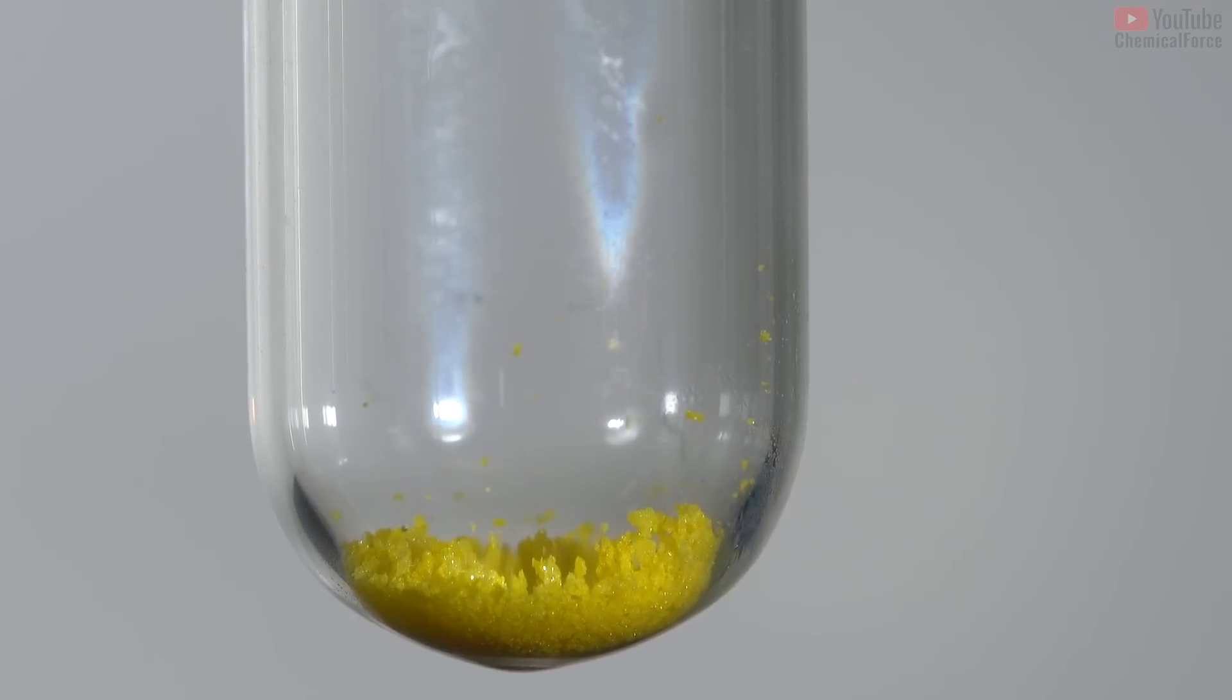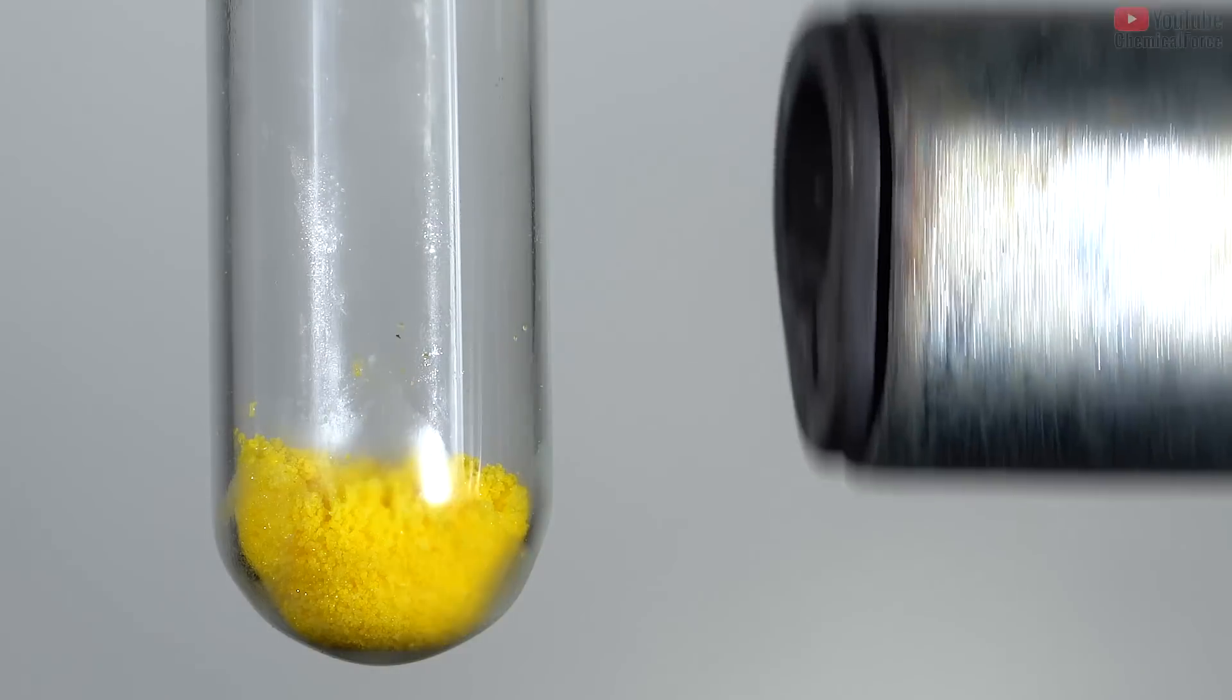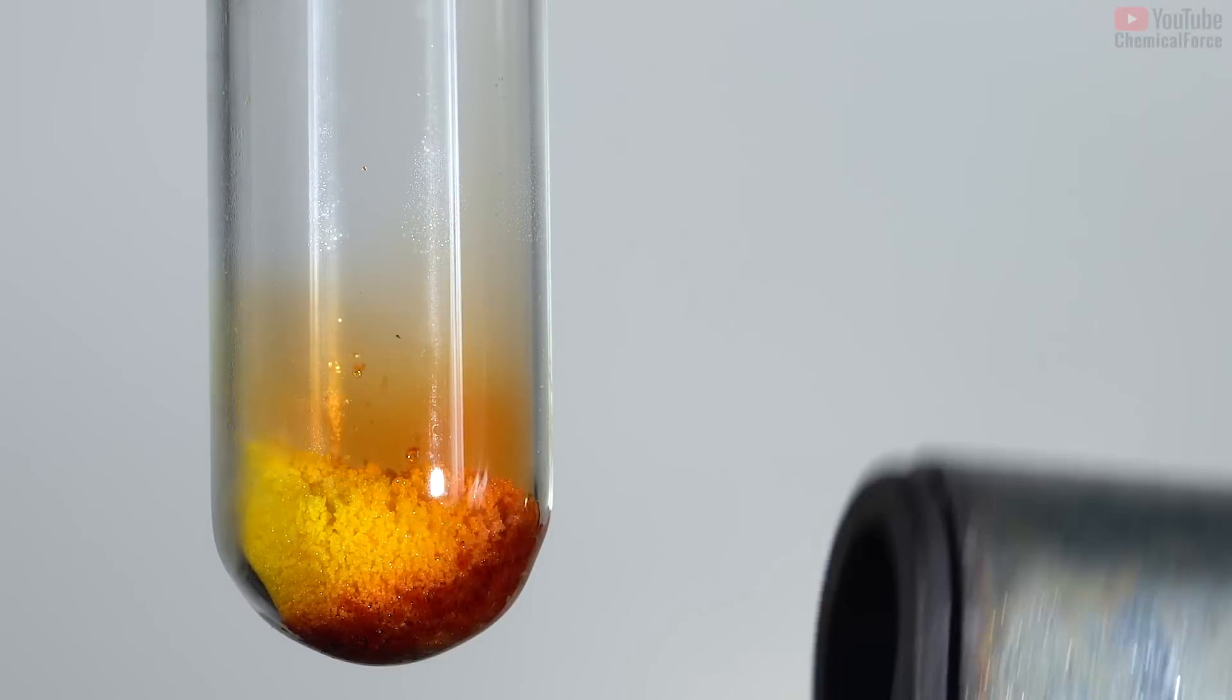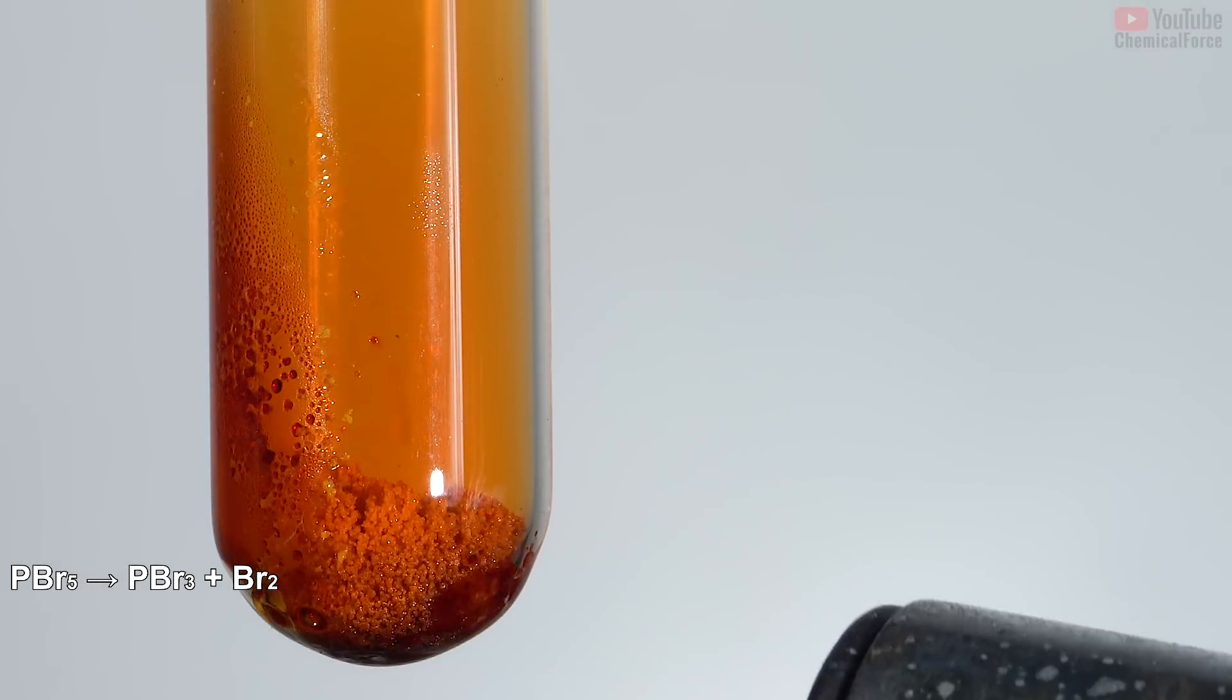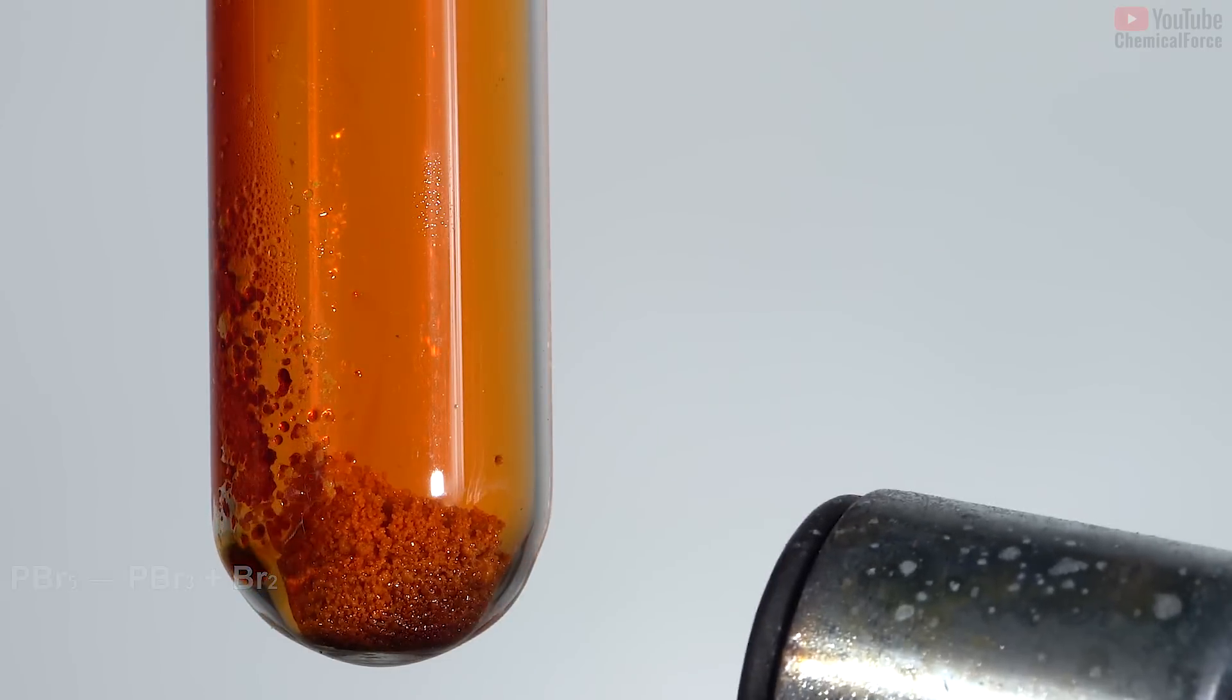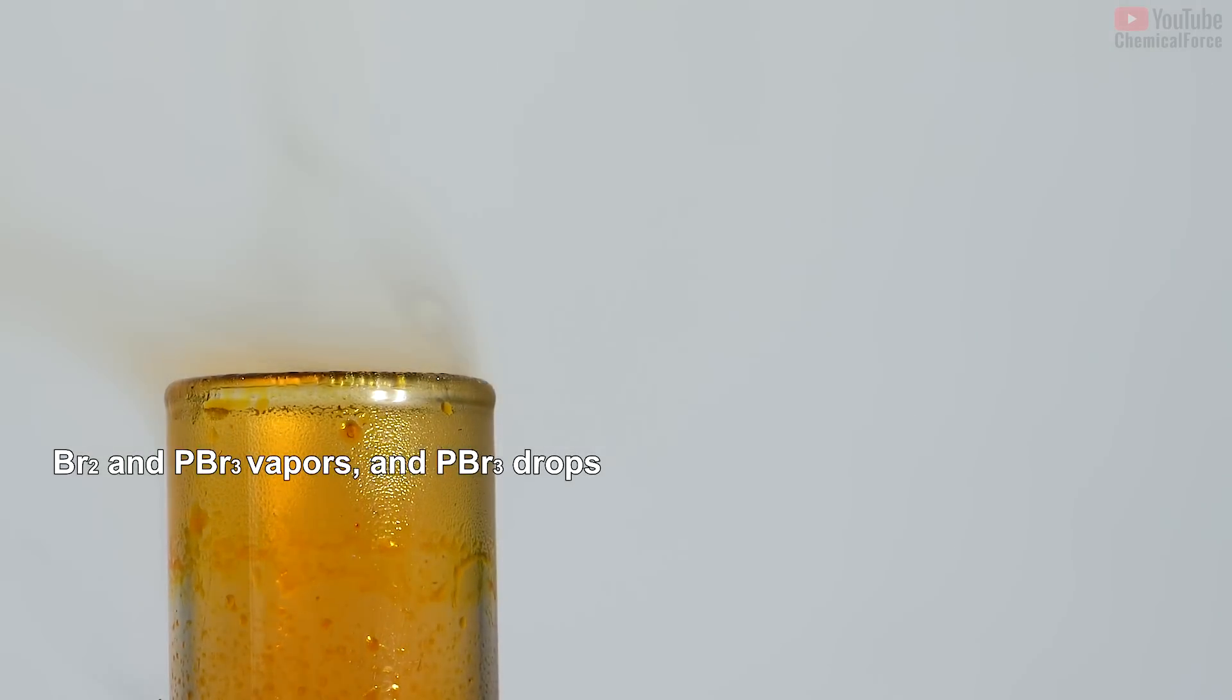Phosphorus pentobromide decomposes at about 100 degrees Celsius to give phosphorus tribromide and bromine. In this way, in the vapor phase it is completely dissociated to phosphorus tribromide and bromine.